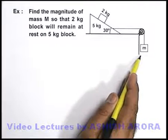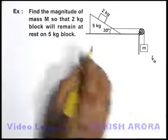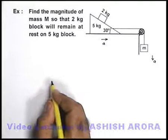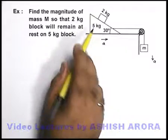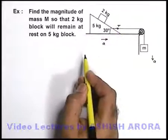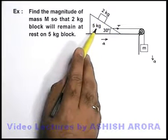We can say this mass M, if it is coming down with an acceleration a, both of these blocks will also move toward right with the acceleration a. And we can consider this combined system as a 7 kg block which is pulled by this string having tension T, because 2 kg is given to be at rest on this 5 kg.